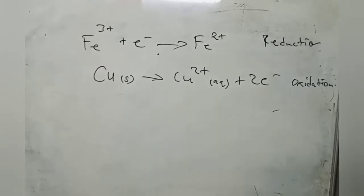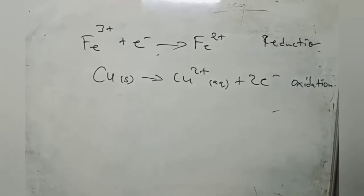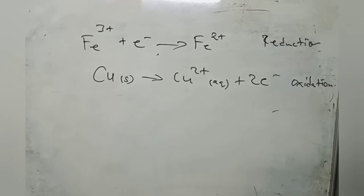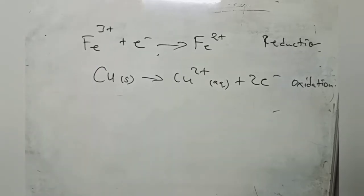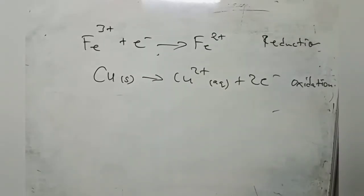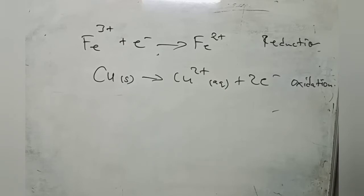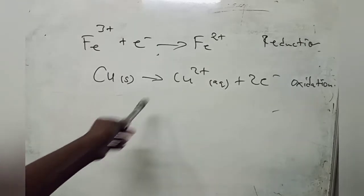Here are examples of half reactions. In the first one, an electron is on the left side, showing a gain of electrons — that is reduction. The charge was three and after gaining one electron it reduces by one, giving a charge of two. In the second equation, there is a loss of electrons — that is oxidation — and that's why the charge increases from zero, a neutral charge, to a charge of two.